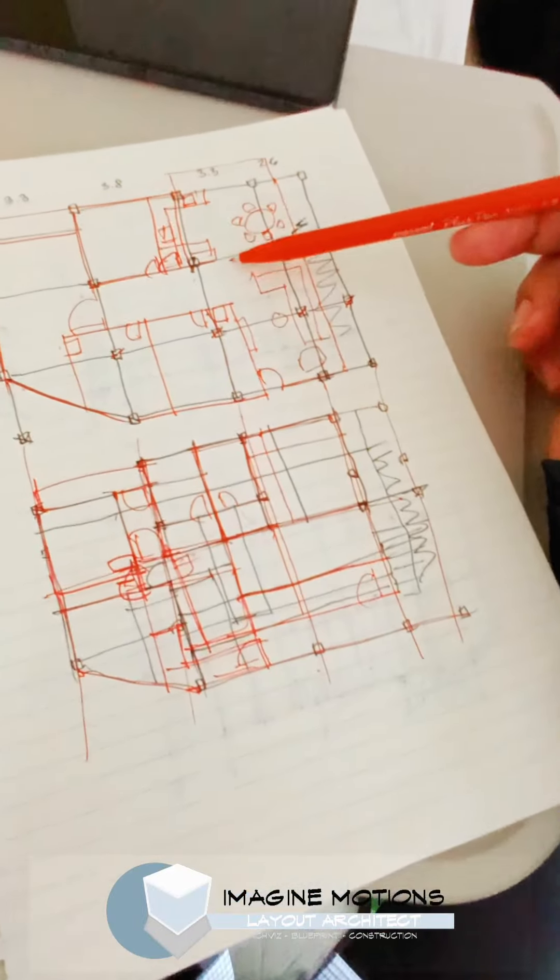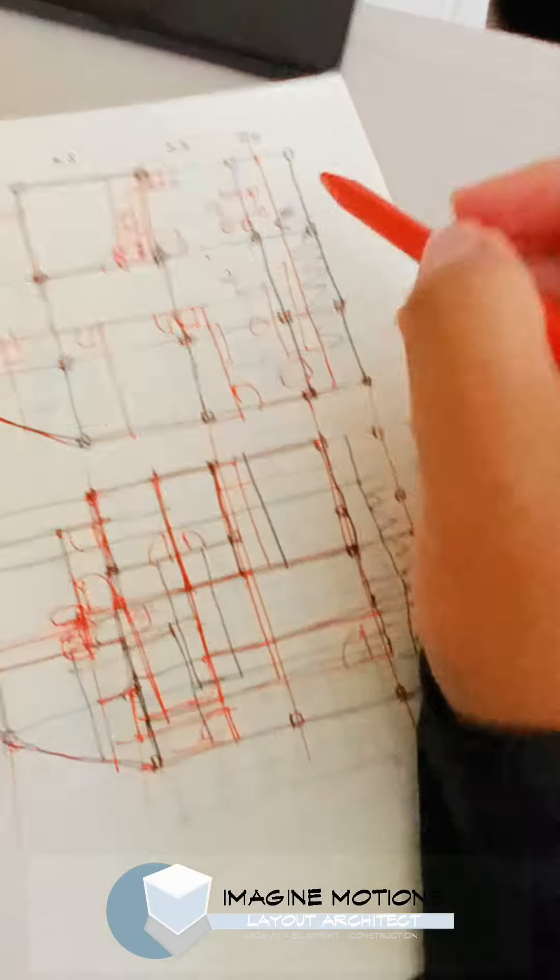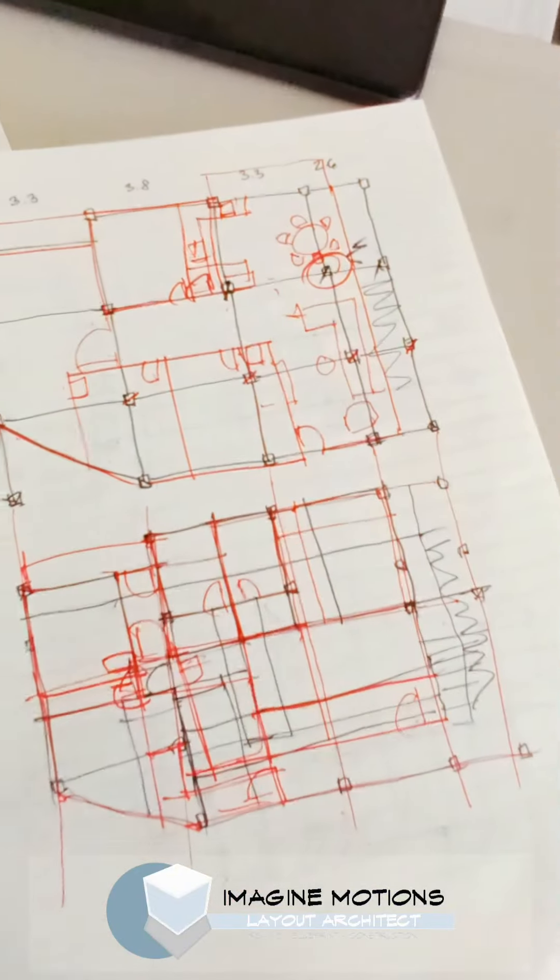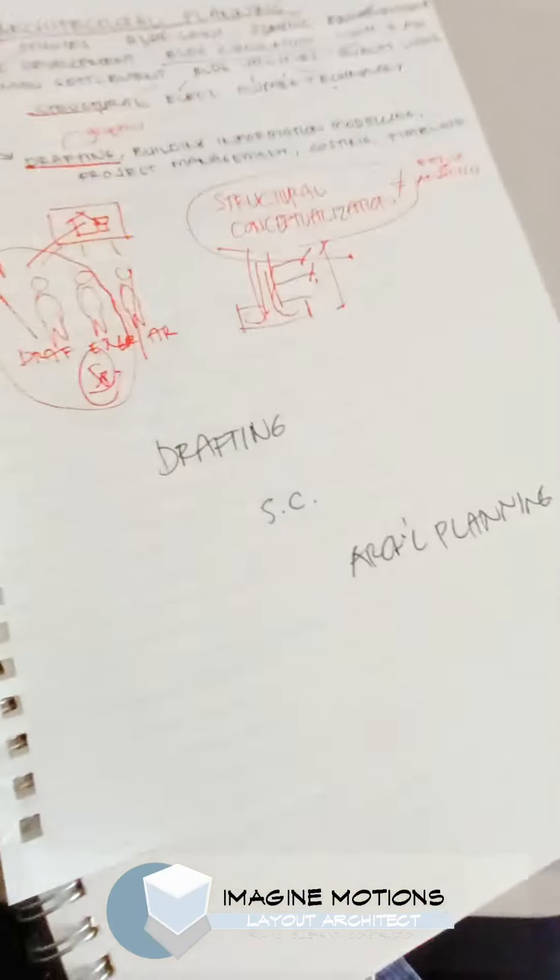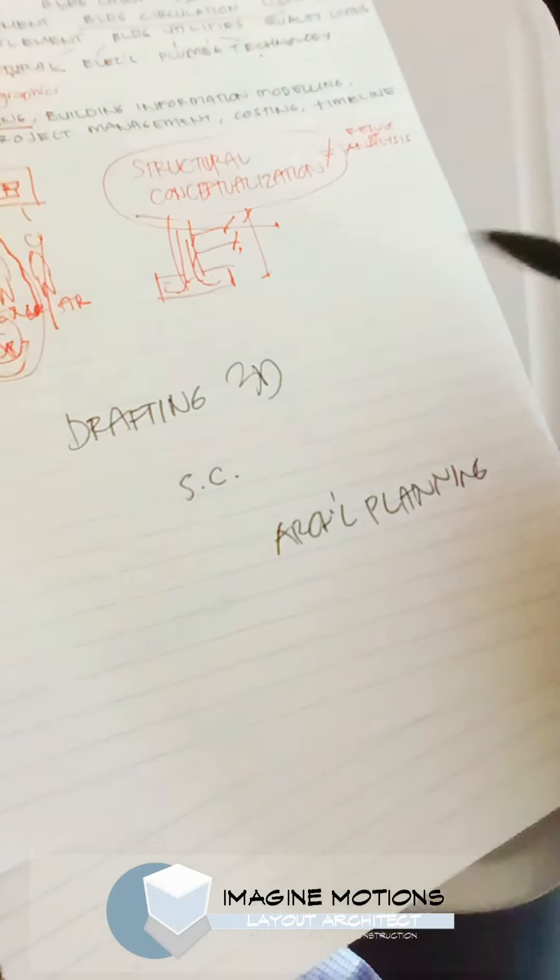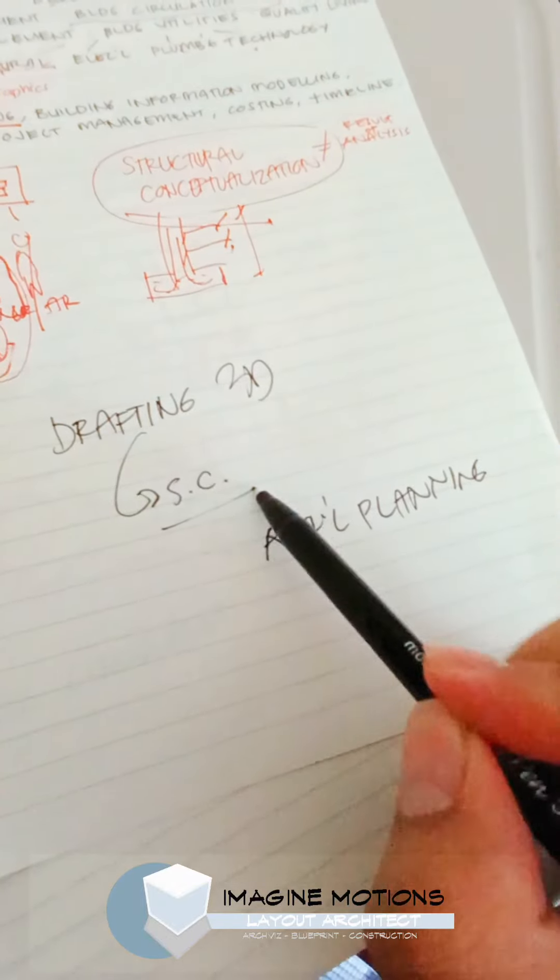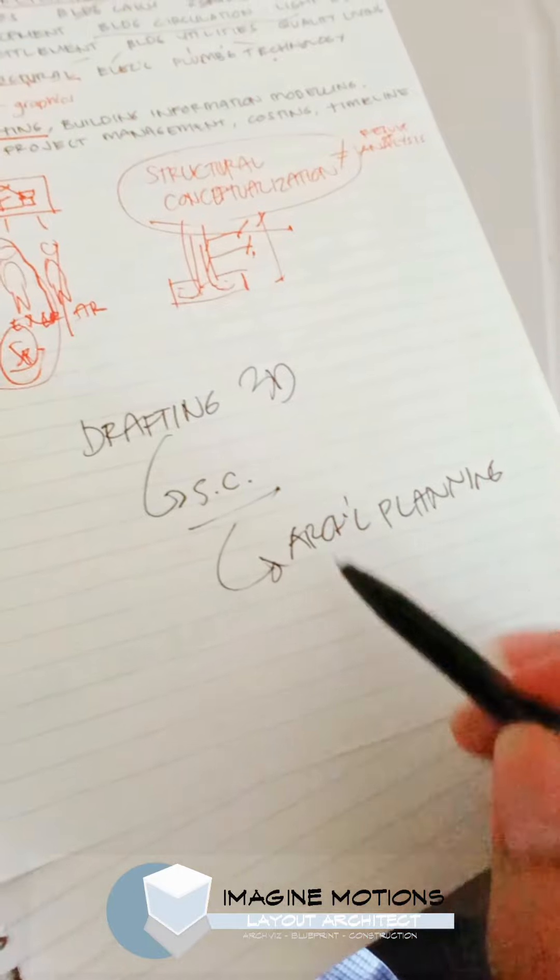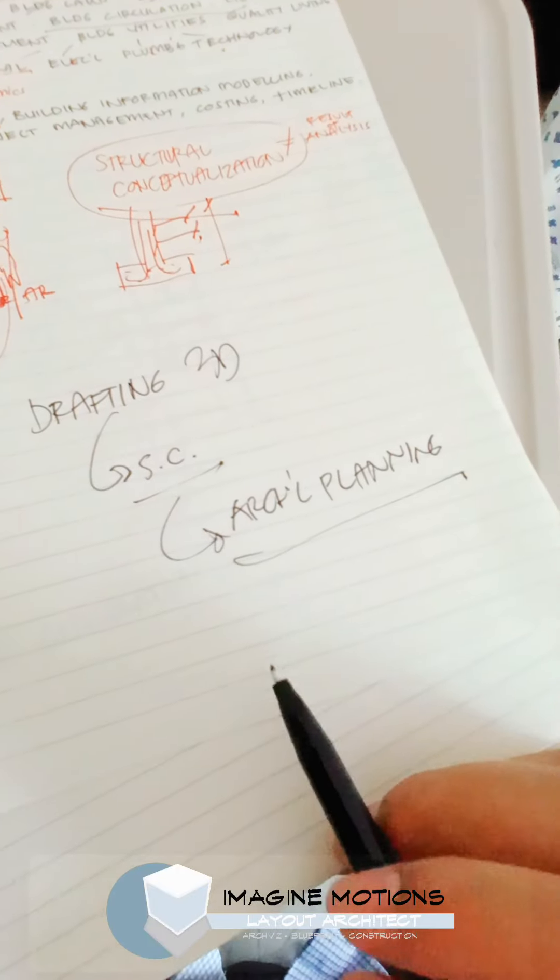And this is what happened to one of our projects, where the planning came first and the columns came afterwards. Suddenly, we have to readjust. That's because the drafting and 3D came first, structural conceptualization, and then planning last, which should be the other way around.